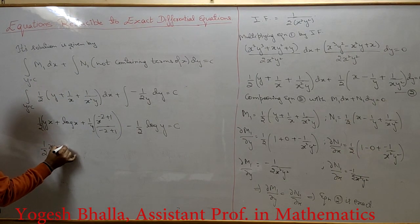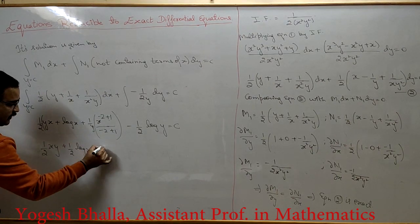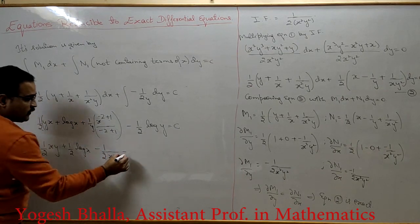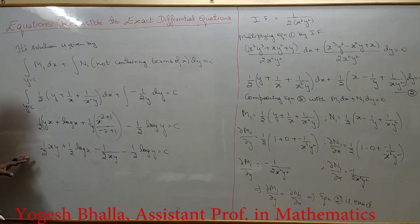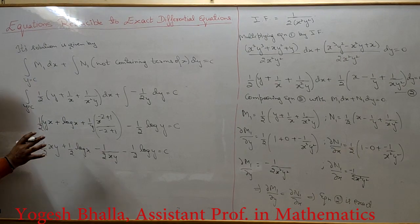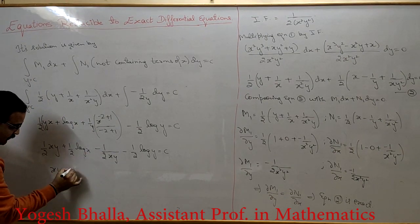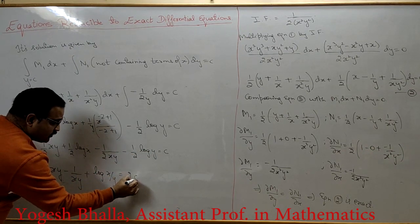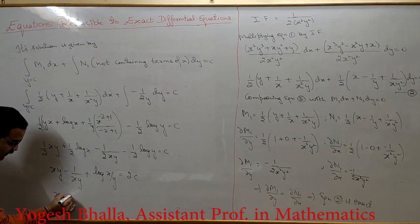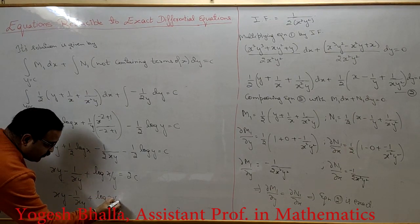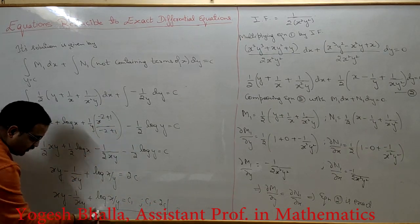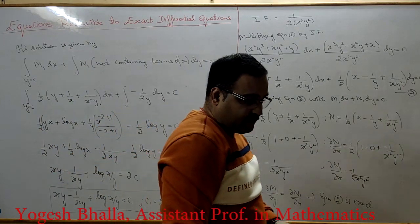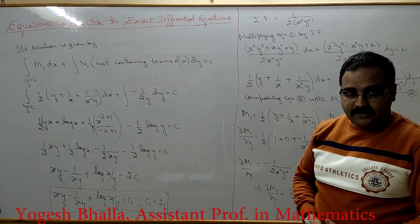Since 1/2 appears in every term, multiply through by 2: xy + log x − 1/(xy) − log y = 2c. This can be rewritten as xy − 1/(xy) + log(x/y) = c1, where c1 = 2c. This is the solution of the given differential equation, which was not exact but was reduced to an exact equation by multiplying by the integrating factor.